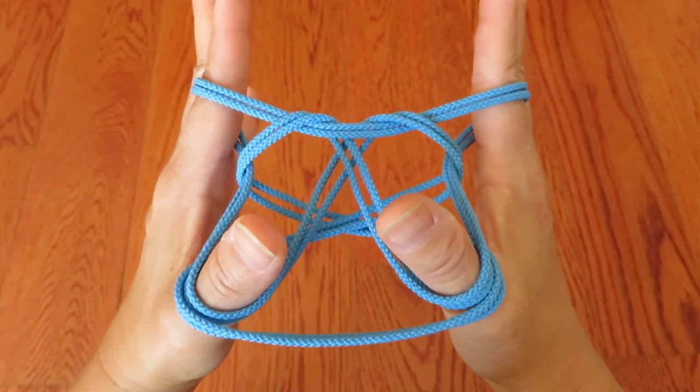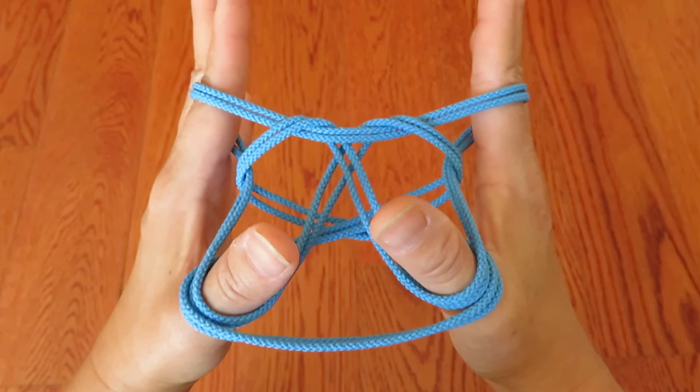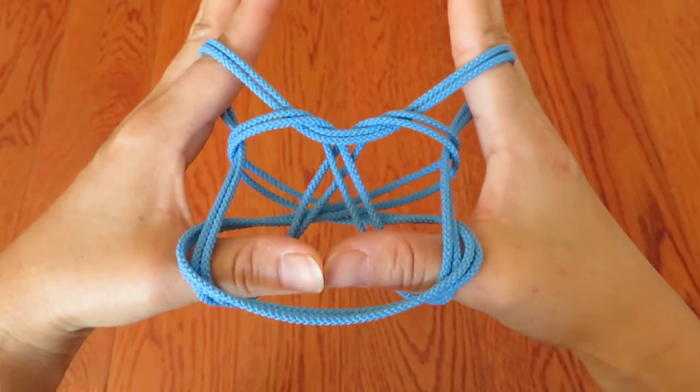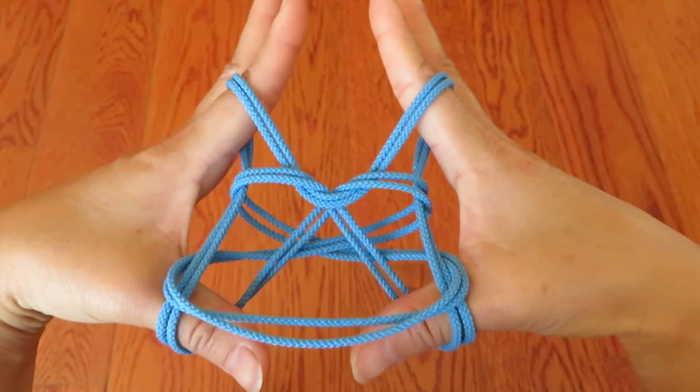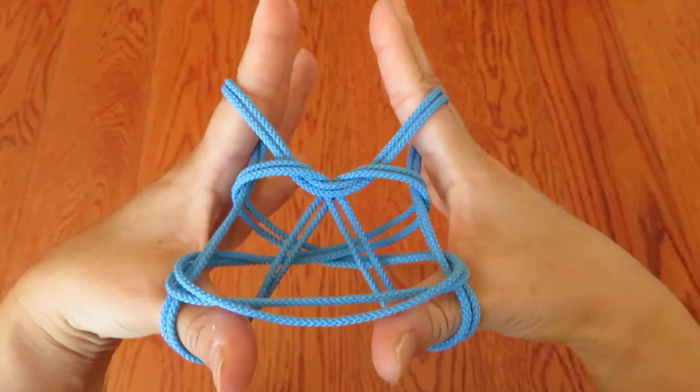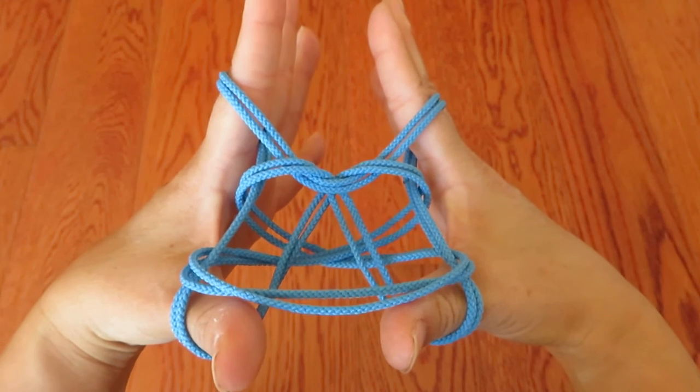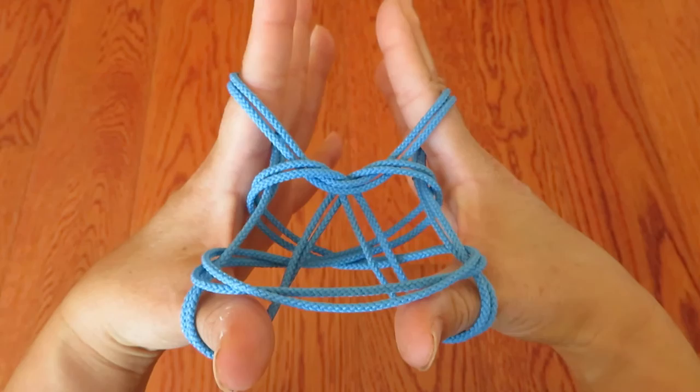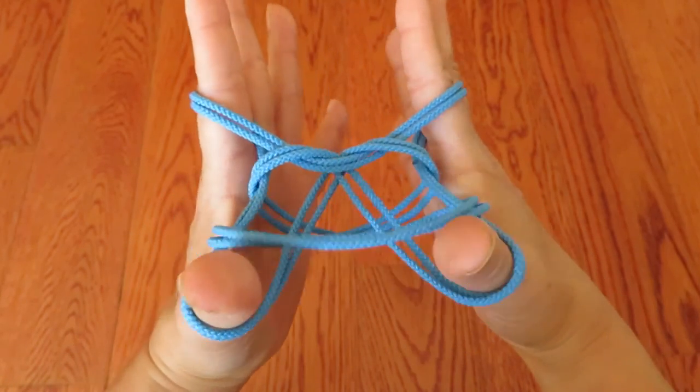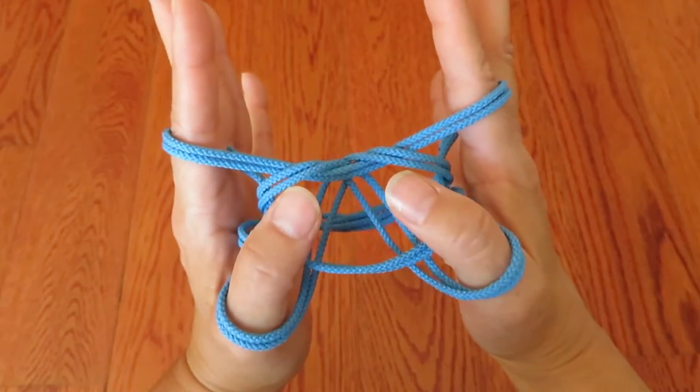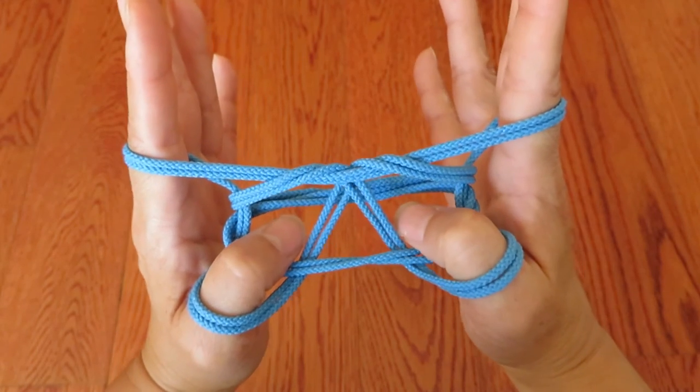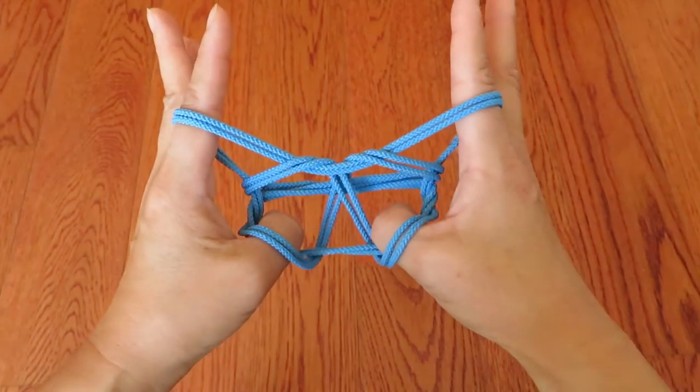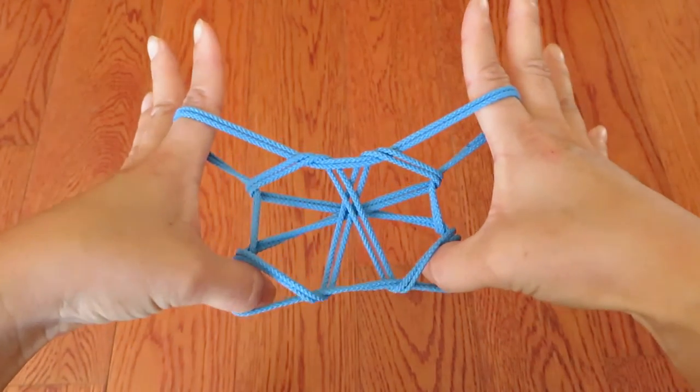Slowly, like this. Then keeping that double horizontal strings, go over with both thumbs like this, and then put both thumbs in the horizontal double strings like this and pull toward you.